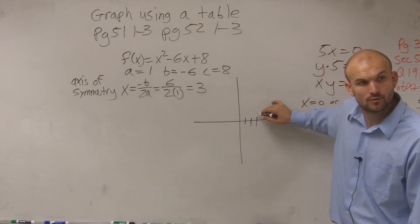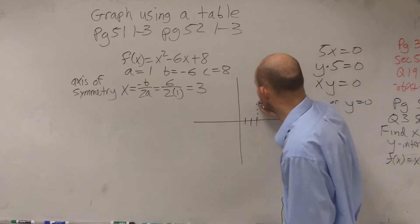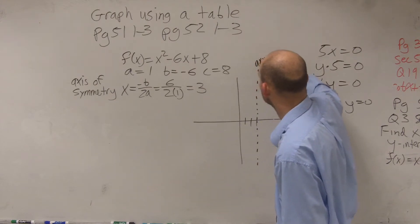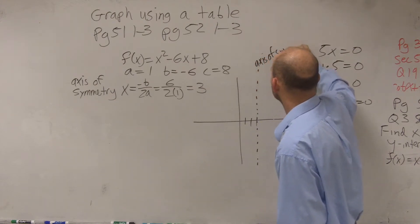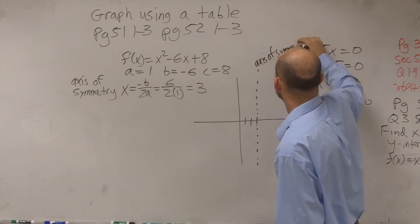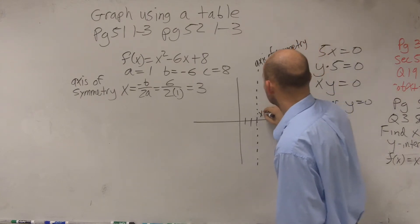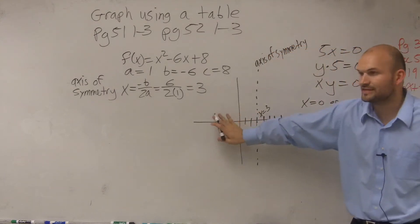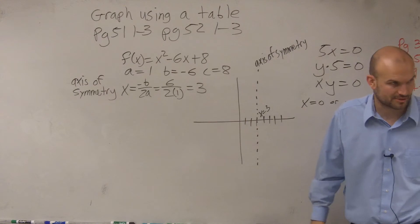So at 3, we have a vertical line. That is our axis of symmetry, x equals 3. Does everybody see that? This graph is reflected about the axis of symmetry.